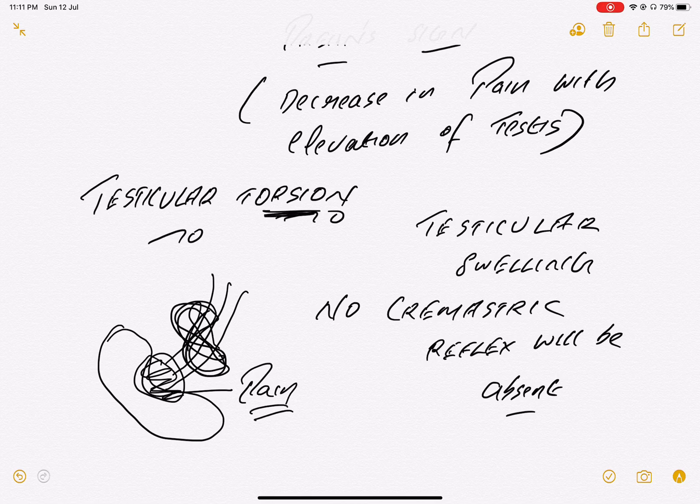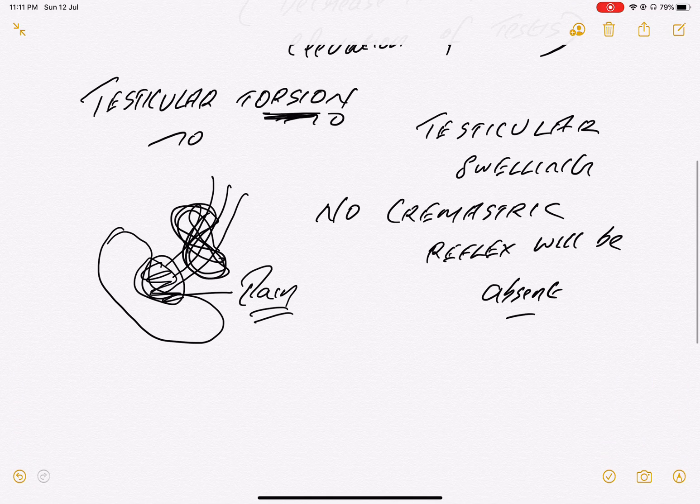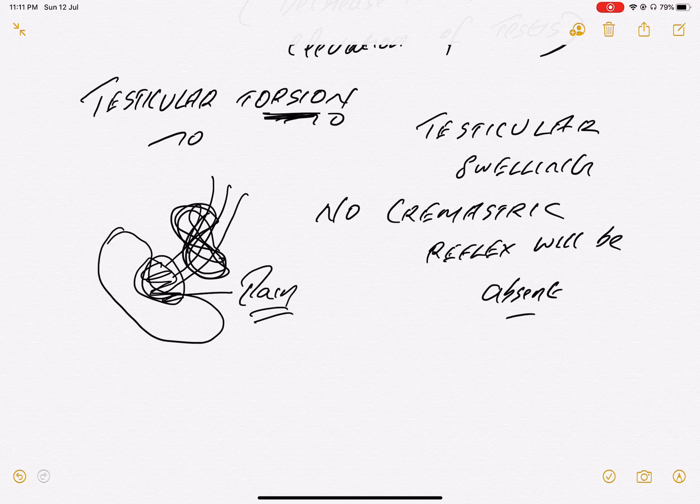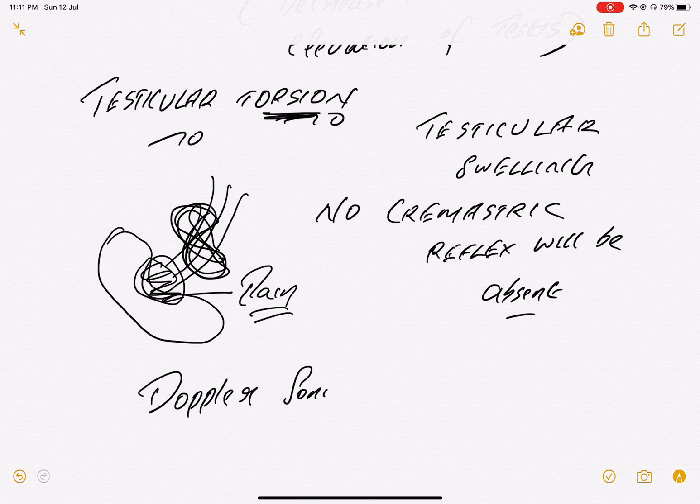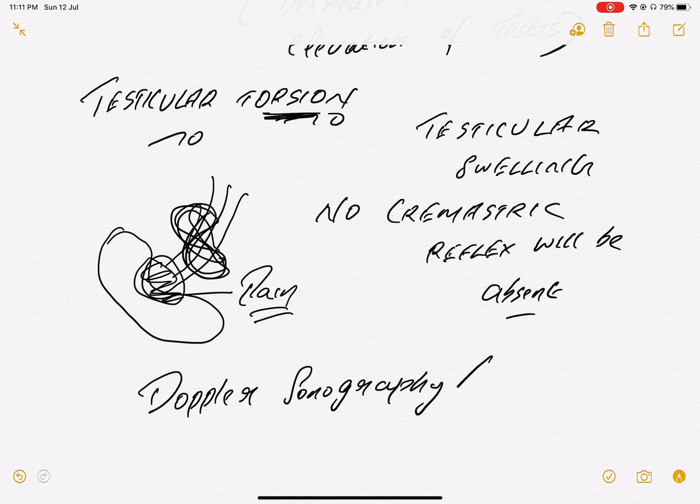So you can confirm: normally in medicine, blood supply to an organ, testis or ovary or uterus, wherever we do something called Doppler study, right? Doppler sonography. So in testicular torsion also we do what? Doppler sonography. Very important question in exam. They will give you in Doppler you can see decreased blood flow to testis.